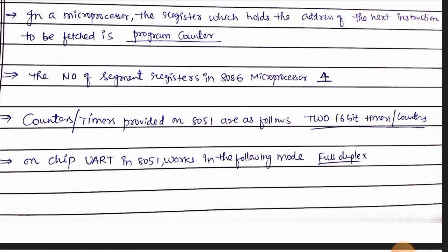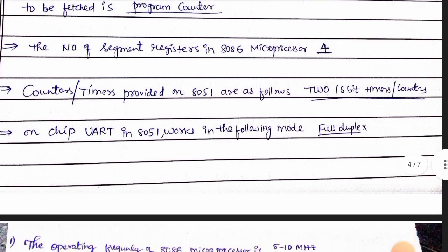The counters and timers provided on the 8051 are 2 timers and 2 counters. On-chip UART is used for serial transmission. UART is a serial transmission register. The following operating mode is full duplex. Full duplex means both-side transmission, while half duplex is only one-side transmission.